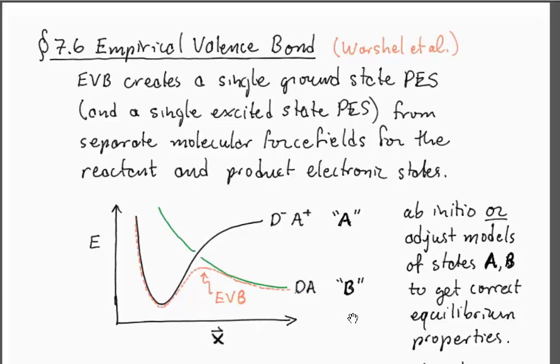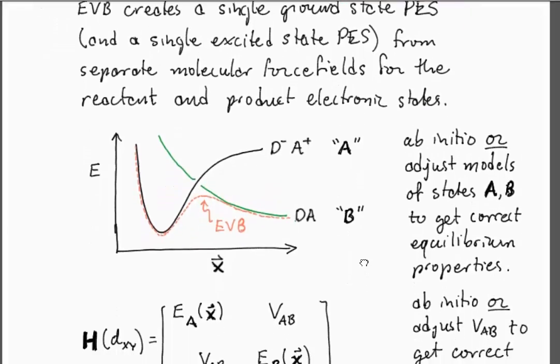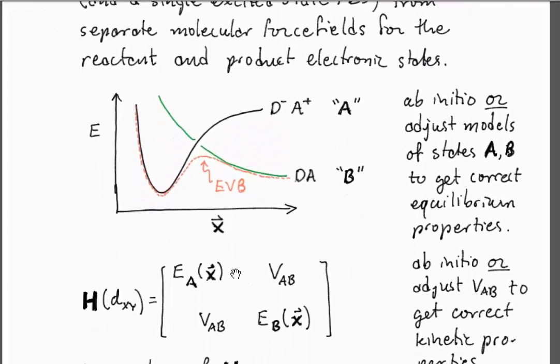You can imagine mixing these in the same way that you would do if you were doing real quantum mechanics and developing a force field to describe the potential energy landscape when you're in the electronic configuration of the reactant state and the force field when you're in the electronic configuration of the product state, and then you just include an empirical mixing parameter, a coupling between these two states.